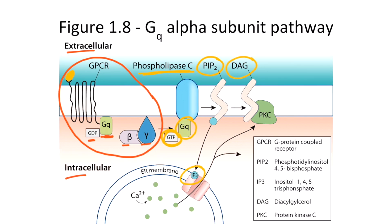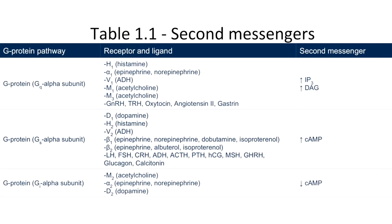We can see from the image that IP3 binds to the endoplasmic reticulum, causing it to release calcium. Calcium and DAG then cause activation of protein kinase C, which is ultimately responsible for the cellular response. So we just covered the GQ alpha subunit pathway. Again, the pathway activates IP3 and DAG, which ultimately cause activation of protein kinase C.